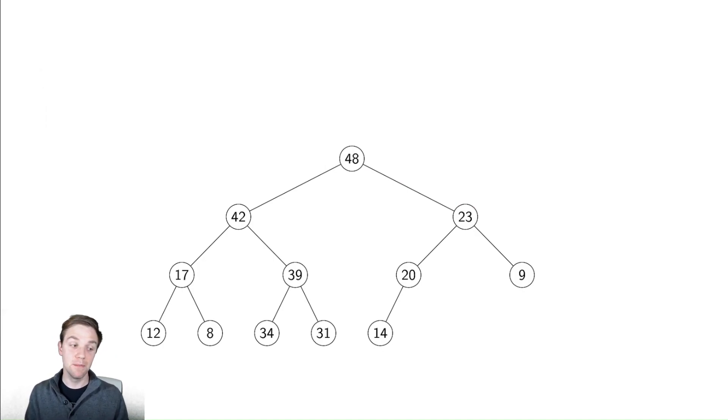This is just a binary tree, meaning that every single node has at most two children. Now, let's explain what makes this a heap.